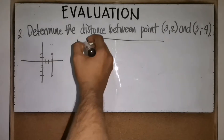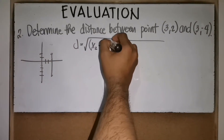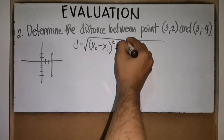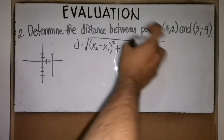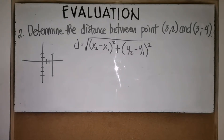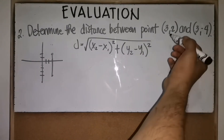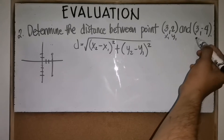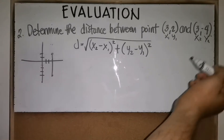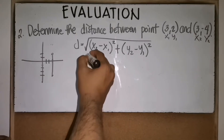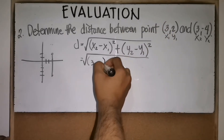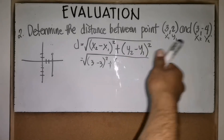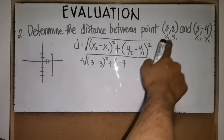The distance formula is d = √[(x₂ - x₁)² + (y₂ - y₁)²]. We label (3, 2) as (x₁, y₁) and (3, -4) as (x₂, y₂). Substituting: x₂ = 3, x₁ = 3, y₂ = -4, y₁ = 2.